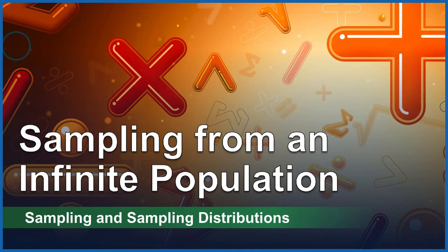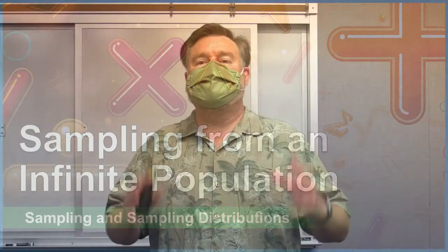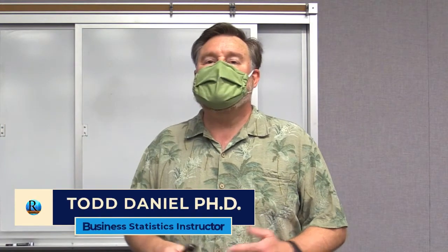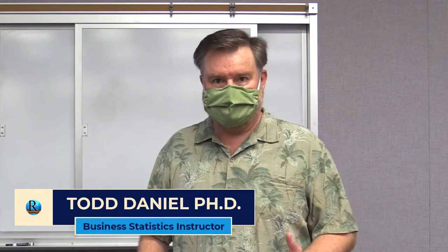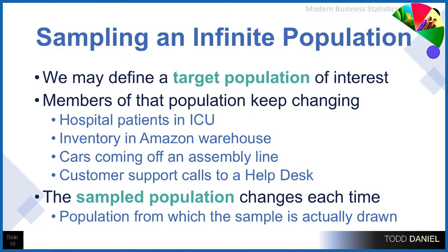In our last video we learned how to sample from a finite population. Now let's learn how we can sample from an infinite population. We can define a target population — that's our population of interest. However, it's quite possible that our population of interest contains people, subjects, elements that keep changing over time, where our population is never static.